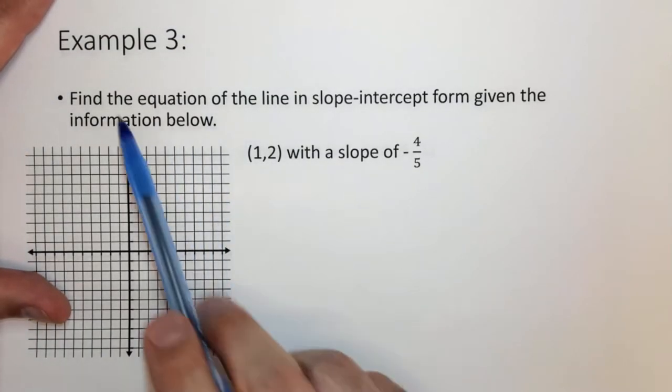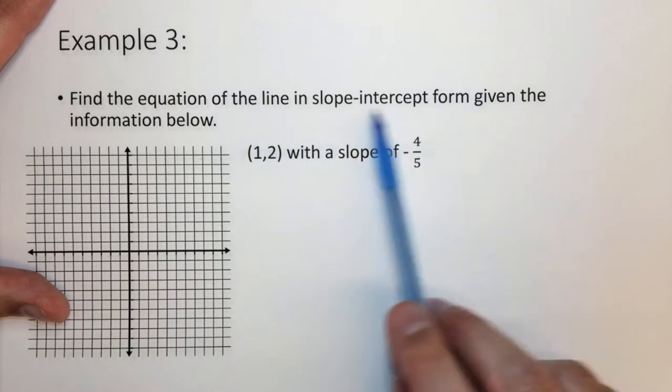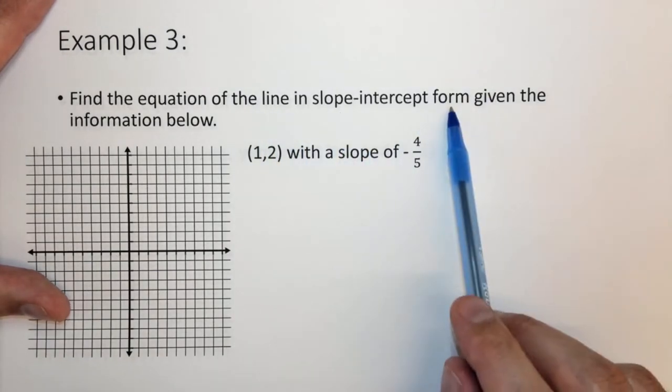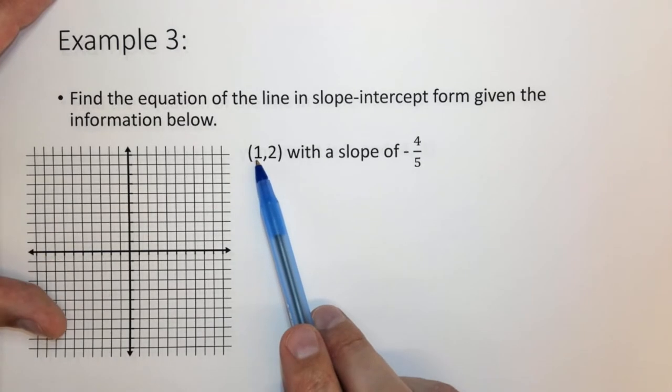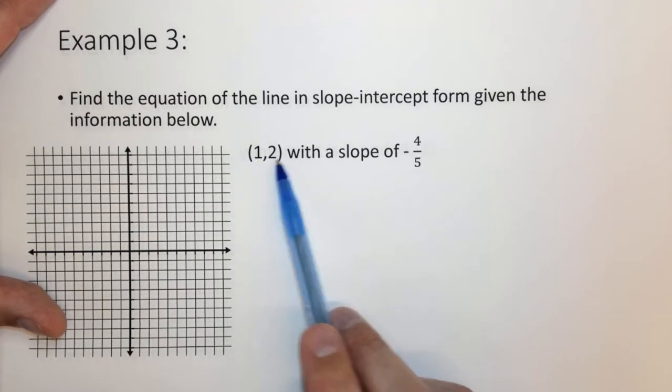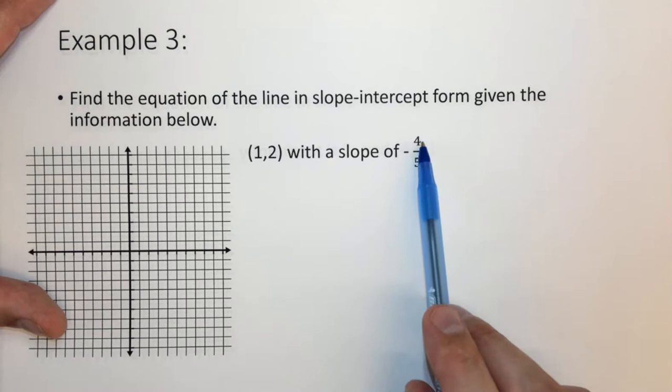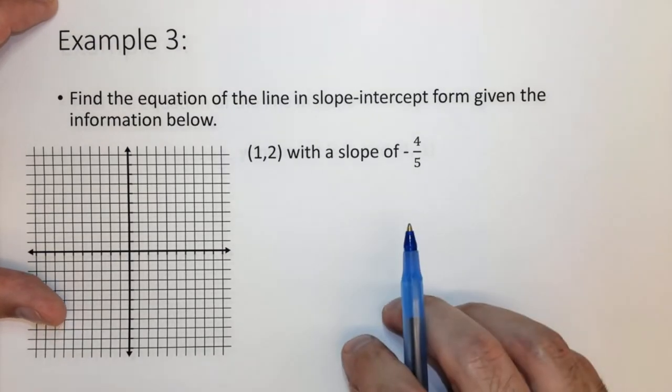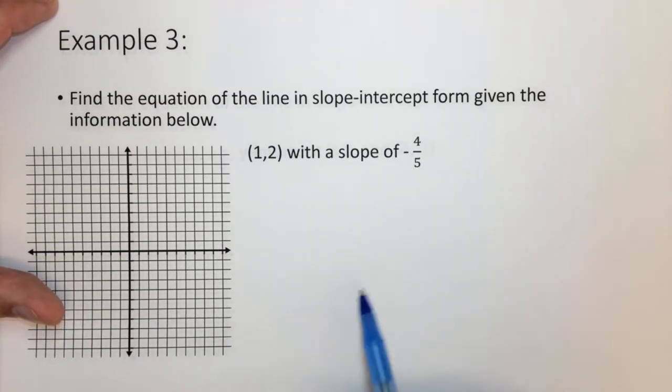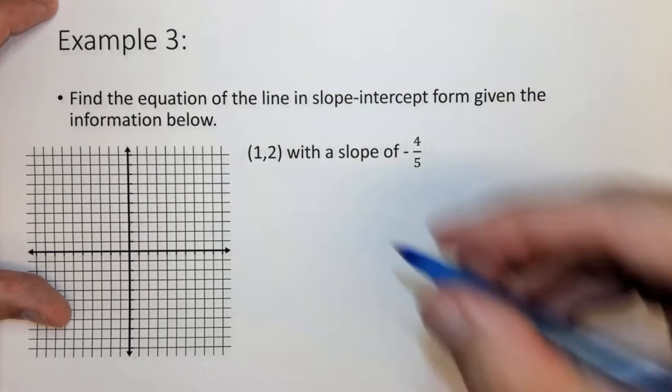In this case it says find the equation of a line using the y equals mx plus b form given the information below. Here we have a value of 1, 2, with a slope of negative 4 fifths. So how would we actually solve this? Well, what we want to do is find the y-intercept. That's our goal. Well remember, it's y equals mx plus b.